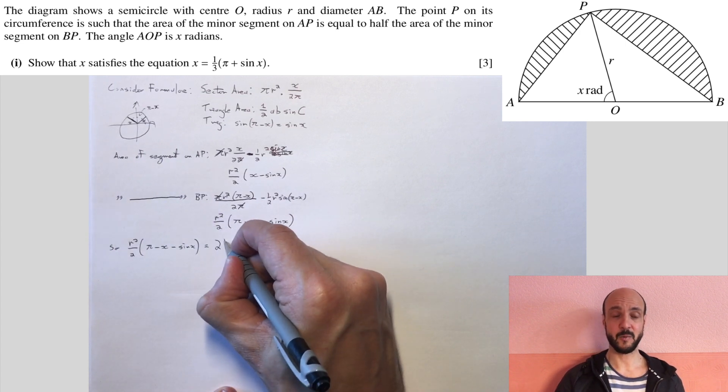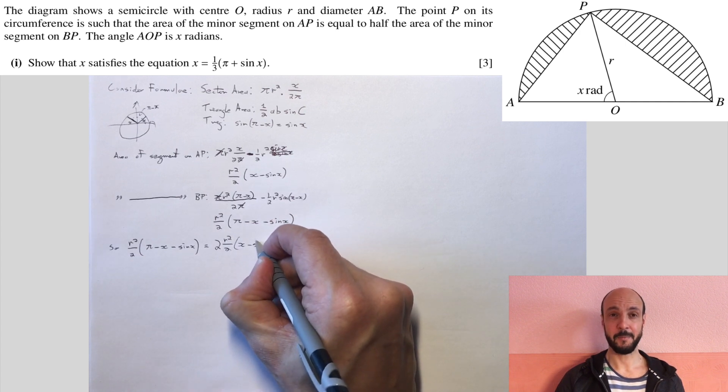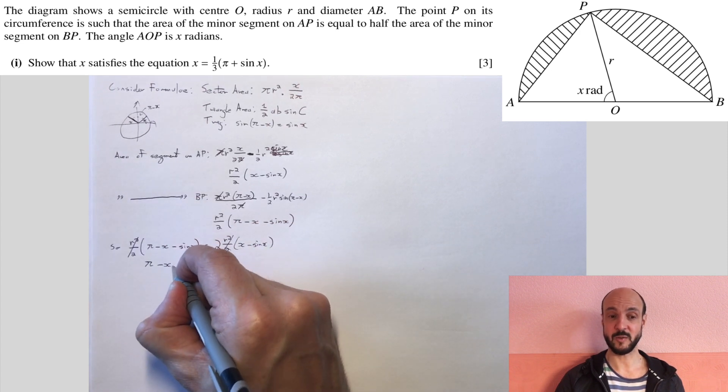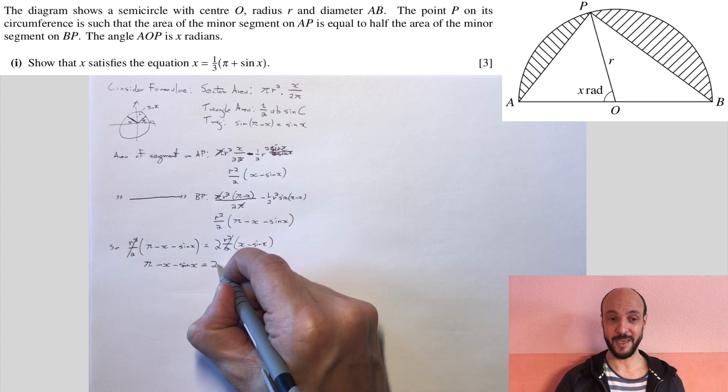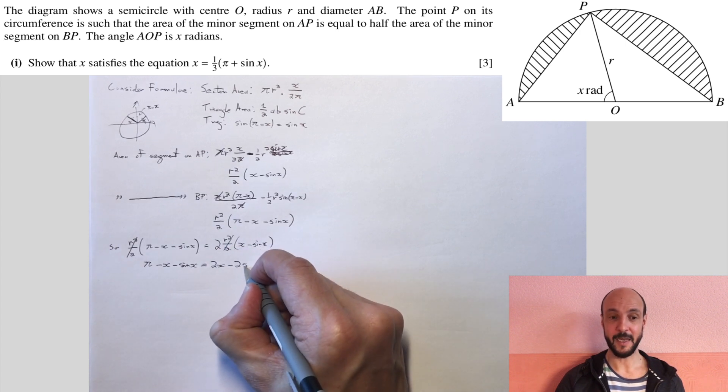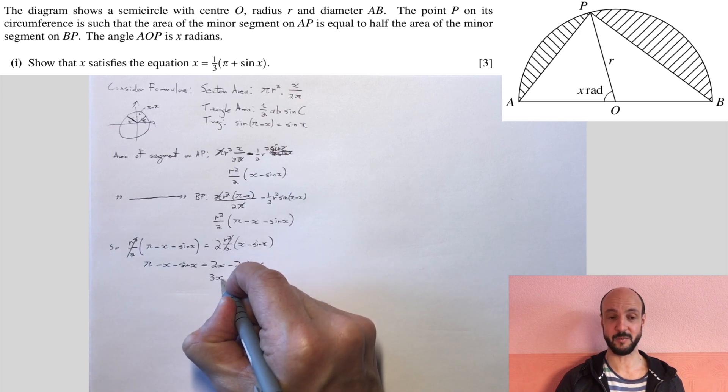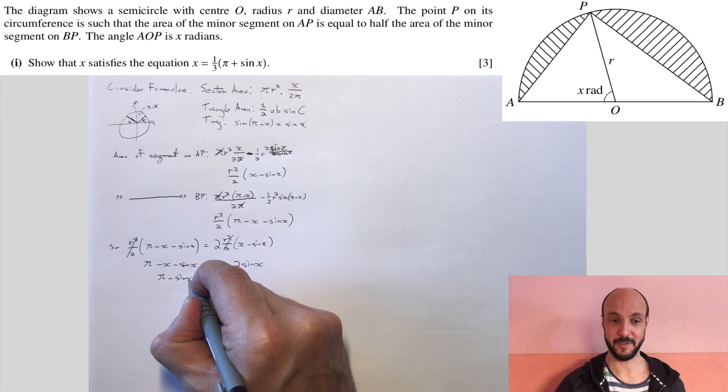Now our r squared over 2 cancel out, and we're left with pi minus x minus sine x is equal to 2x minus 2 sine x. And if we gather our x's together, we've got 3x is equal to pi plus sine x, which directly gives us our equation that we were asked for in the question: x is equal to a third times by pi plus sine x.